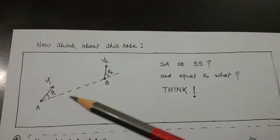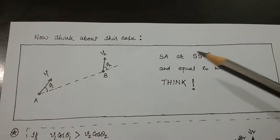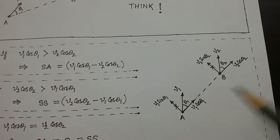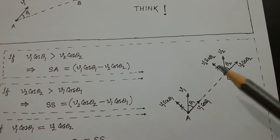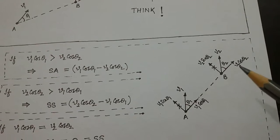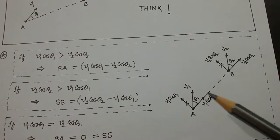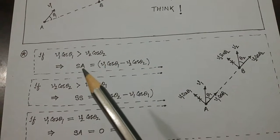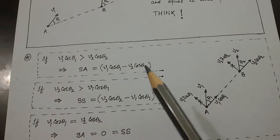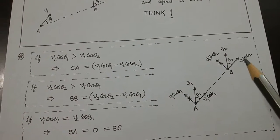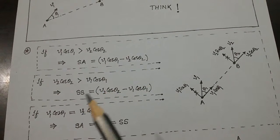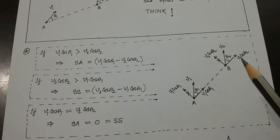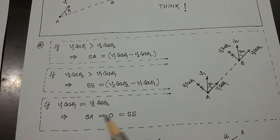Now this case is very, very important. In this case speed of approach or speed of separation depends on which cos component dominates. The sin components play no role as before. If V1 cos theta 1 is greater than V2 cos theta 2, then speed of approach equals V1 cos theta 1 minus V2 cos theta 2. If V2 cos theta 2 is greater, then speed of separation equals V2 cos theta 2 minus V1 cos theta 1. And if V1 cos theta 1 equals V2 cos theta 2, it is neither approach nor separation.